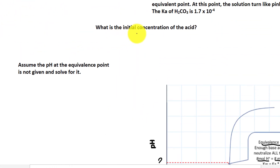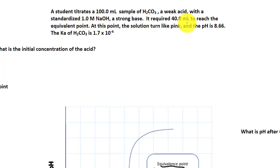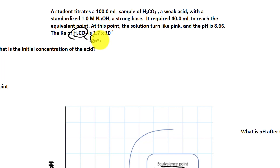Now let's solve our very first problem. A student titrates a 100 mL sample of H₂CO₃ — this is formic acid — a weak acid, with a standardized 1 M NaOH. It requires 40 mL to reach the equivalent point, at which point the solution turned pink. The pH is 8.66. The Ka for this formic acid is 1.7 × 10⁻⁴.